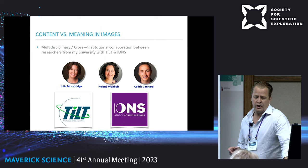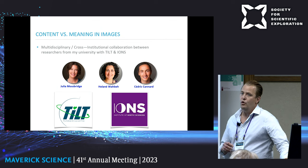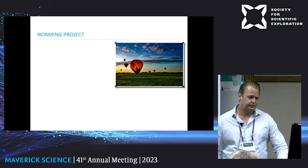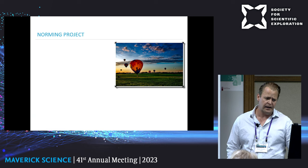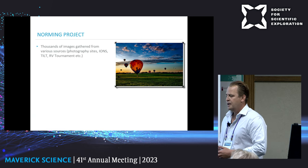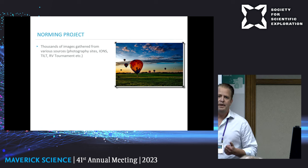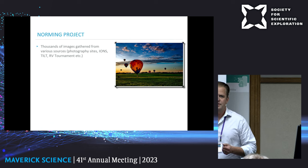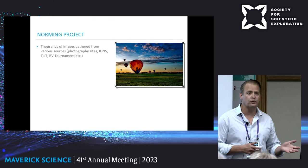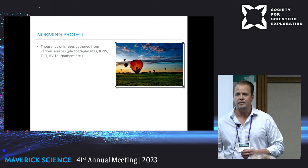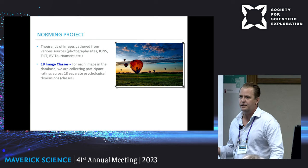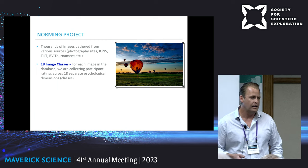For each image in the database, we're collecting ratings across these 18 separate categories and trying to create a normative distribution of ratings. The purpose is to create a curated database of images that can be used for both traditional psychological research as well as parapsychological research — in particular for remote viewing and Ganzfeld types of studies.